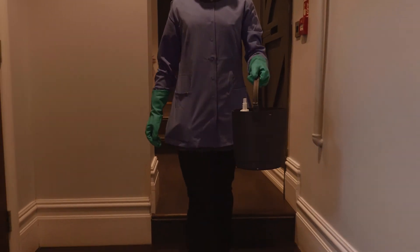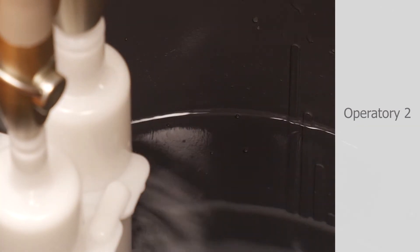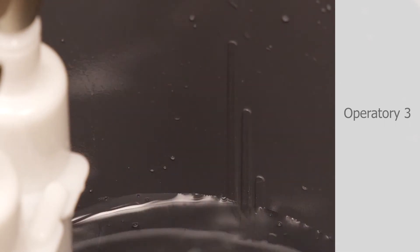Move the dispenser to the next furthest operatory from the central vacuum pump. Repeat this process and move on to the next operatory until all evacuation lines have been treated. Only leave suction on in the first operatory treated.